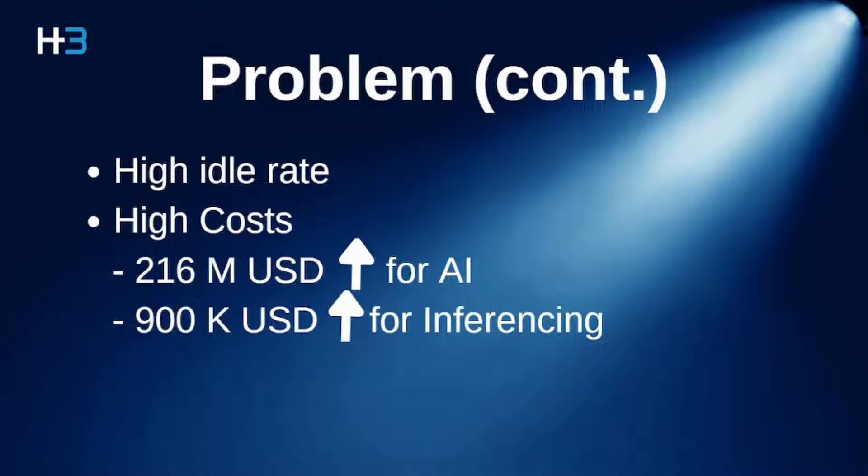For AI racks, each server gets 8 GPUs and there are 1800 servers. Each GPU costs around $15,000. So for just AI racks, the company has to pay $216 million.